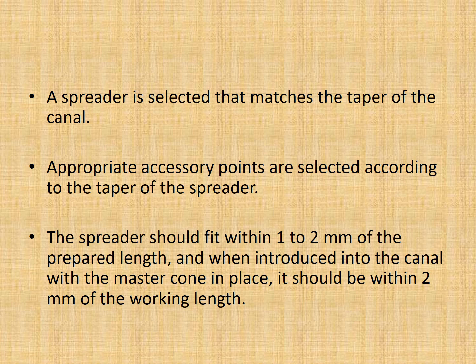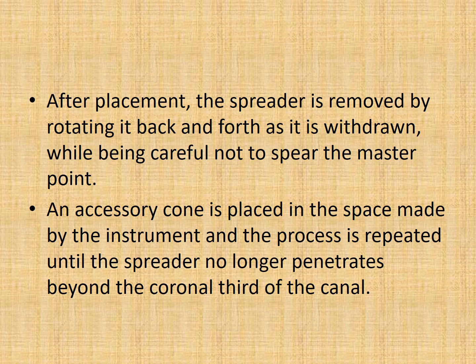The spreader should fit within 1-2 mm of the prepared length, and when introduced into the canal with the master cone in place, it should be at least 2 mm of the working length. After placement, the spreader is removed very gently by rotating it back and forth as it is withdrawn, taking care not to dislodge the master cone — if that happens, the master cone will come out of the canal. An accessory cone is placed in the space made by the instrument, and the process is repeated until the spreader no longer penetrates beyond the coronal third of the canal.